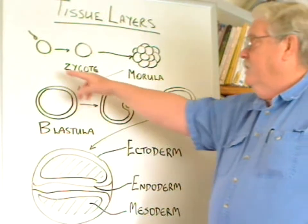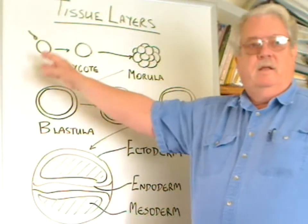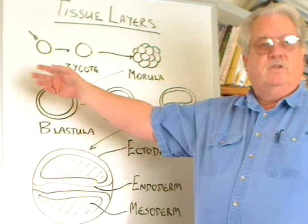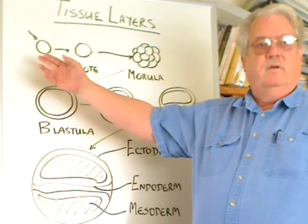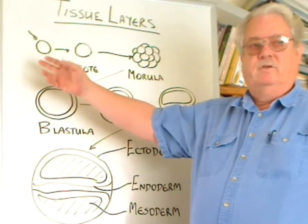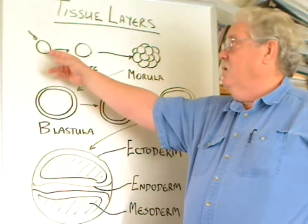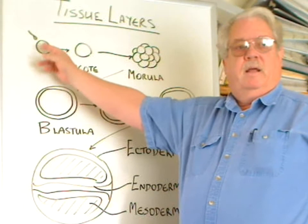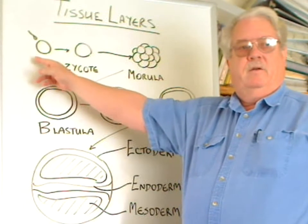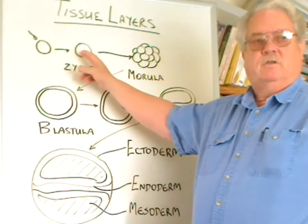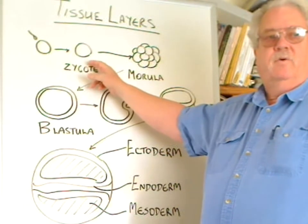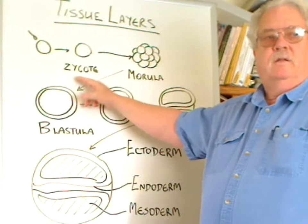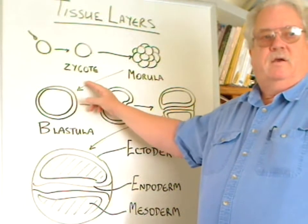Initially, in fertilization to develop a new individual, we have an ovum and a sperm. They will unite to make the first cell of the new individual, called a zygote.